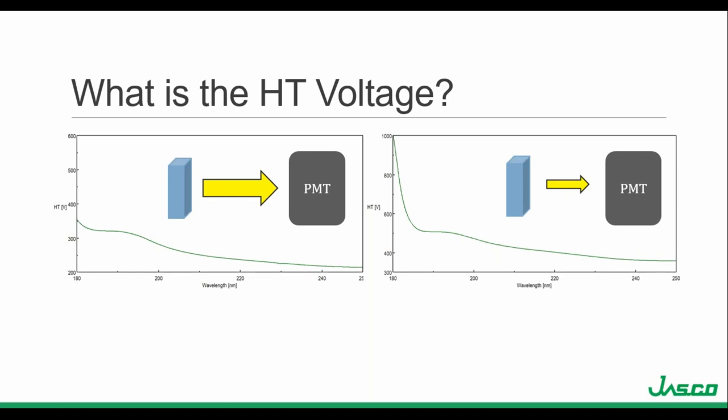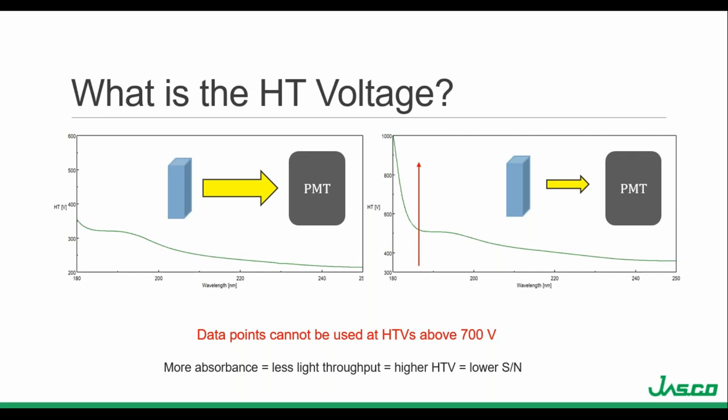However, if a sample absorbs too much light, not enough photons reach the detector and the signal needs to be amplified, increasing the HT voltage. If the HT voltage is equal to or above 700 volts, there are not enough photons being sampled by the photomultiplier tube detector to measure a reliable CD signal, and we can't use these data points. The more photons reaching the detector, the better the signal to noise. At higher HT voltages, while below 700 volts, the CD signal will start to look noisier. Additionally, the further into the far UV you go, the less light available, so the HT voltage increases at shorter wavelengths.